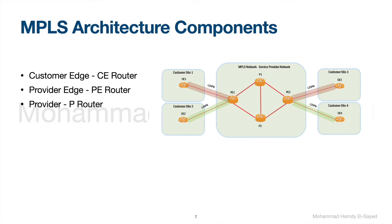MPLS architecture components. We have different types of MPLS routers. Customer edge, or CE router, is located on the customer site and connects the customer site to the MPLS network. CE router doesn't perform any MPLS configurations. Provider edge, or PE router, is located on the edge of the MPLS network and connects the CE router to the MPLS network. The provider router forms the core of the MPLS network and connects PEs to each other.